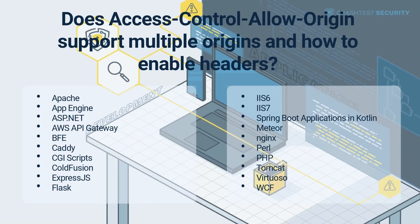To enable Access-Control-Allow-Origin headers, you must first add CORS support to your server. See the Enable CORS website for a full breakdown on how to implement CORS for a specific platform. It will provide you with all the information required to implement CORS and Access-Control-Allow-Origin headers for the stated software.